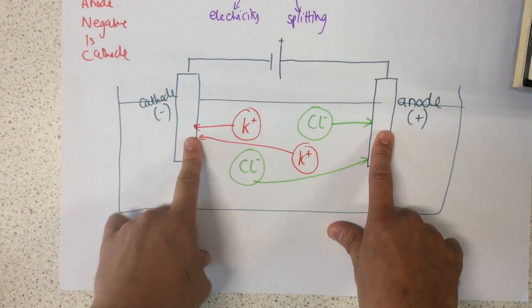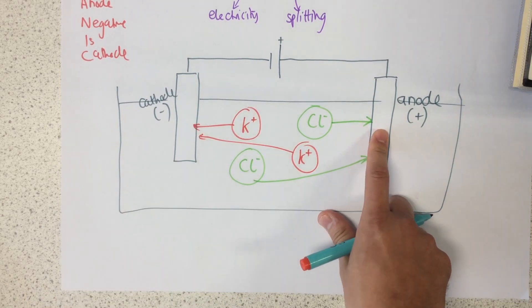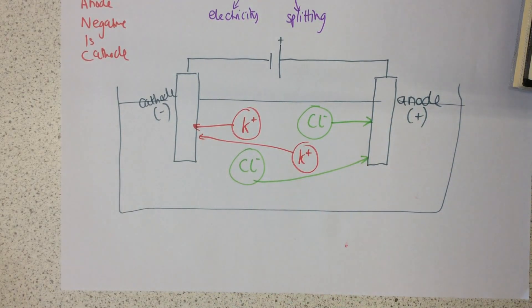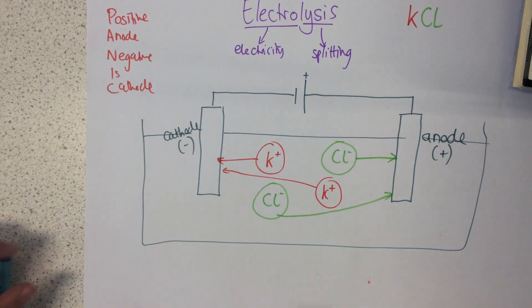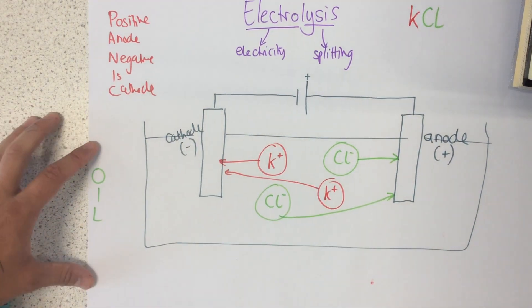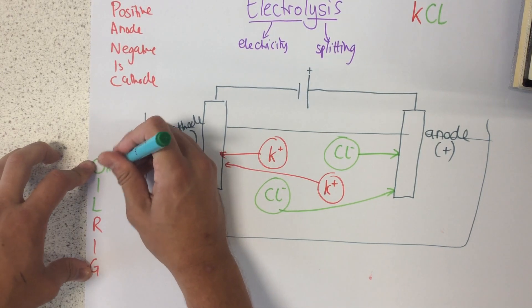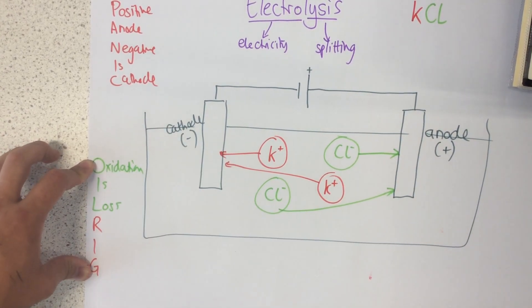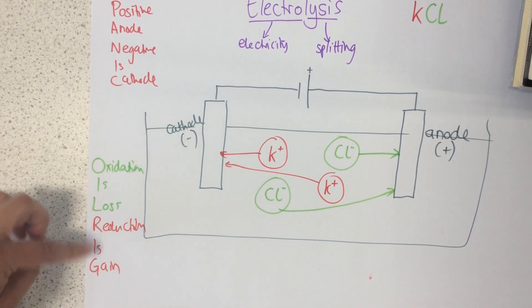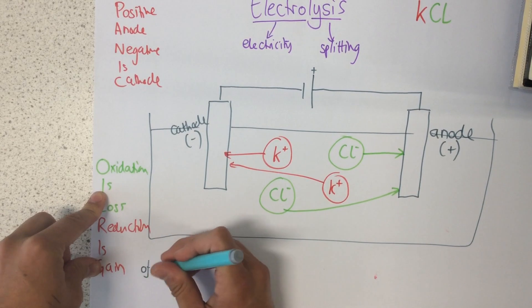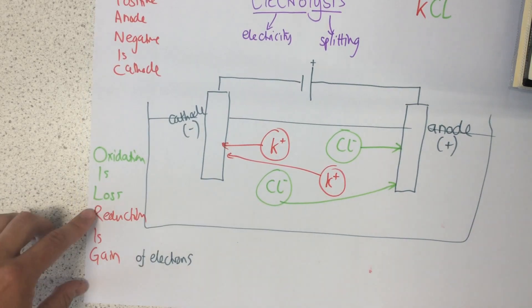At the cathode, potassium is going to form, and at the anode, chlorine gas is going to form. We need to know the equations for each electrode, because electrons are either being gained or lost. There's a helpful acronym called OIL RIG: oxidation is loss, reduction is gain — of electrons. So if we lose electrons it's oxidation, and if we gain electrons it's reduction.